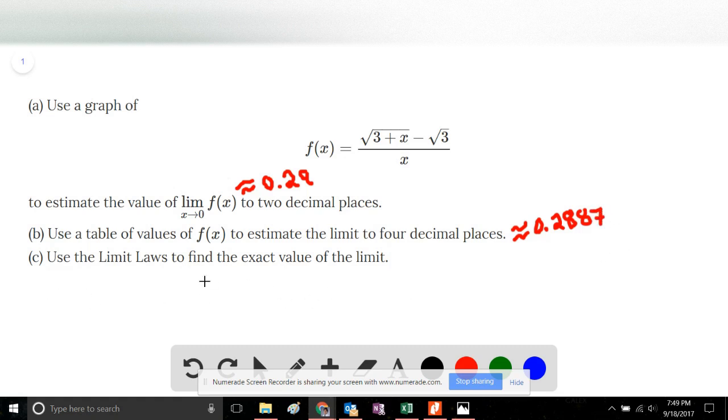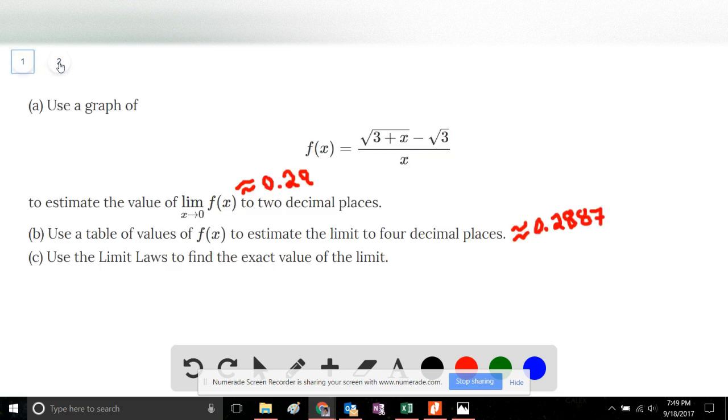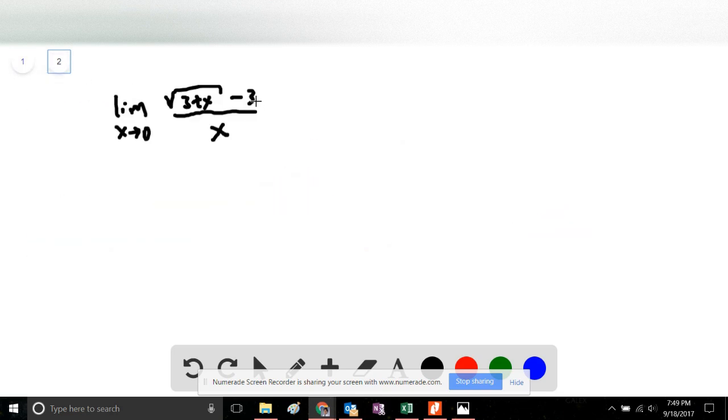Part C: Use the limit laws to find the exact value of the limit. We will rewrite this as a limit on the next page. Limit as x approaches 0 of the square root of 3 plus x minus the square root of 3 over x.